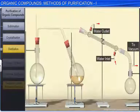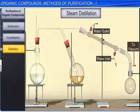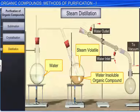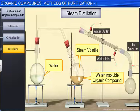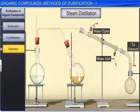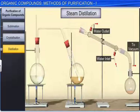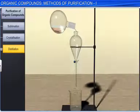Another distillation process, steam distillation, is used to separate substances that are immiscible with water and steam volatile — that is, get evaporated when steam is passed through them. In this process, the liquid to be distilled is kept in a heated flask and steam from the steam generator is passed through it. The mixture of steam and the compound is condensed and collected. The compound is then separated from water using a separating funnel.